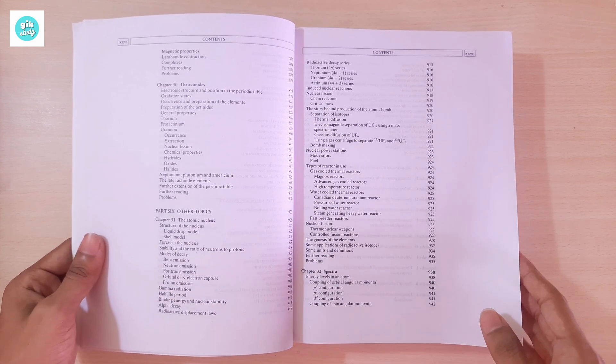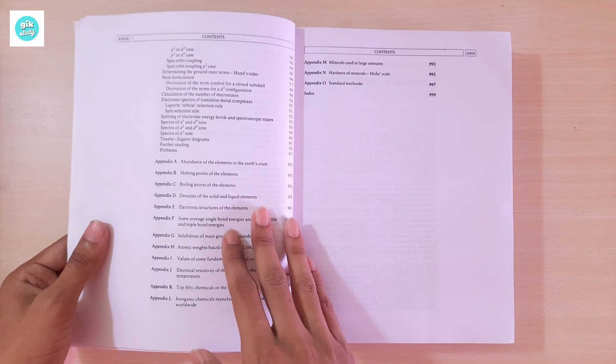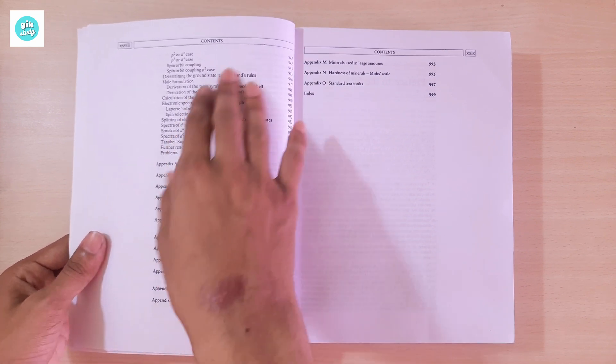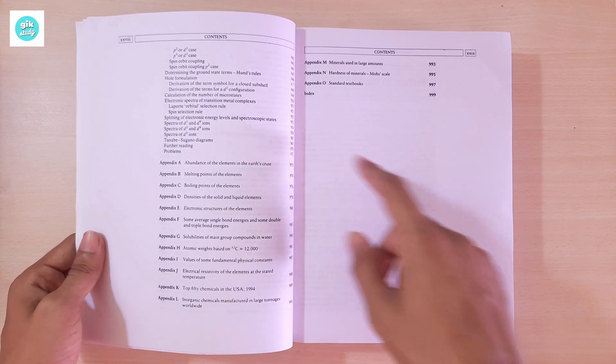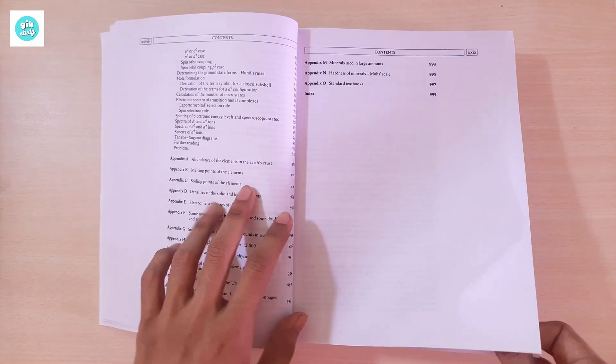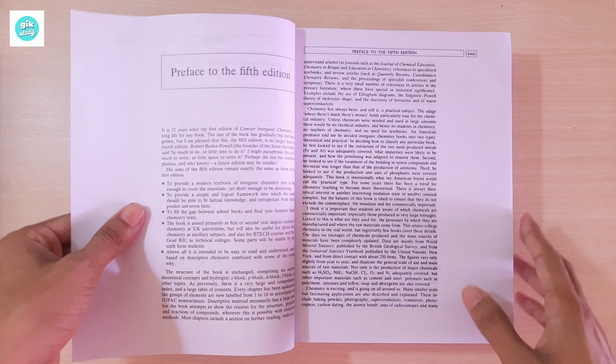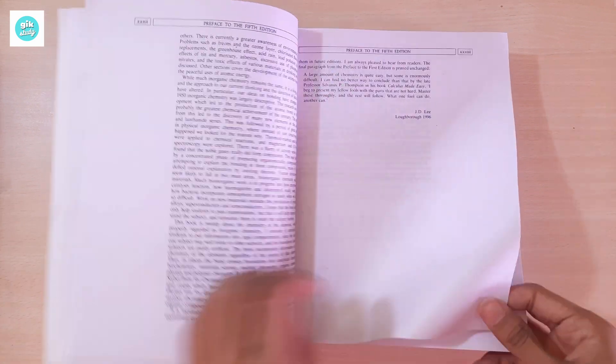Part Six: Other Topics. Chapter 31: The Atomic Nucleus. Chapter 32: Spectra. After that, here are some appendices A through O, and the preface of the fifth edition.